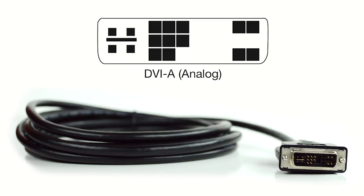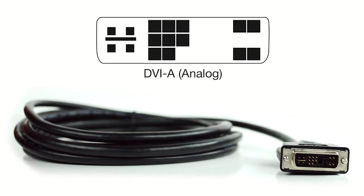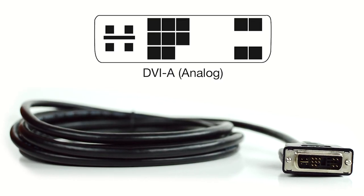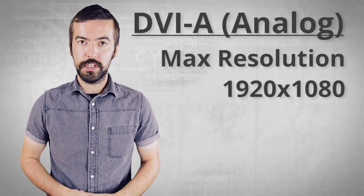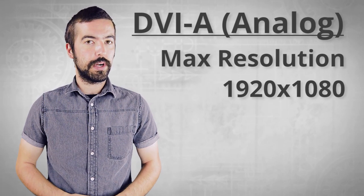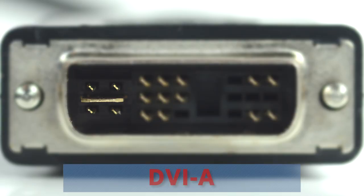Let's start off by looking at DVI-A. DVI-A has pretty much been phased out and isn't used on newer equipment. The A stands for Analog because DVI-A carries an analog video signal. DVI-A is capable of a maximum resolution of 1920x1080. The pin arrangement features 4 pins around a single flat pin and 12 additional pins.